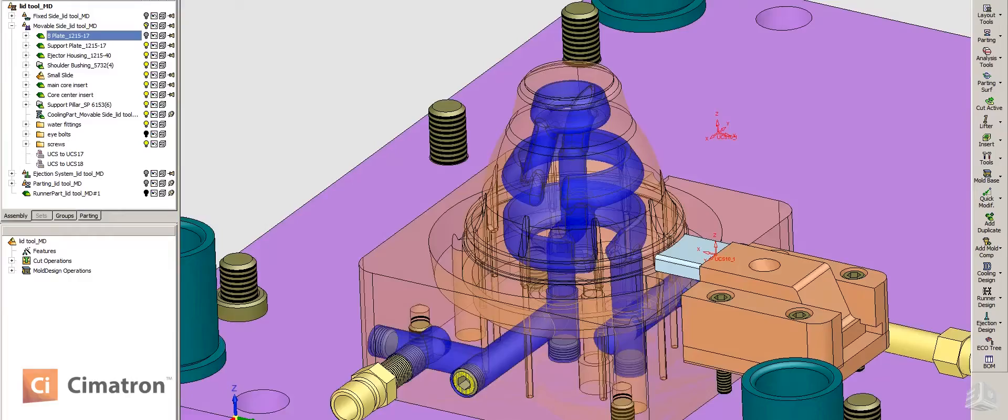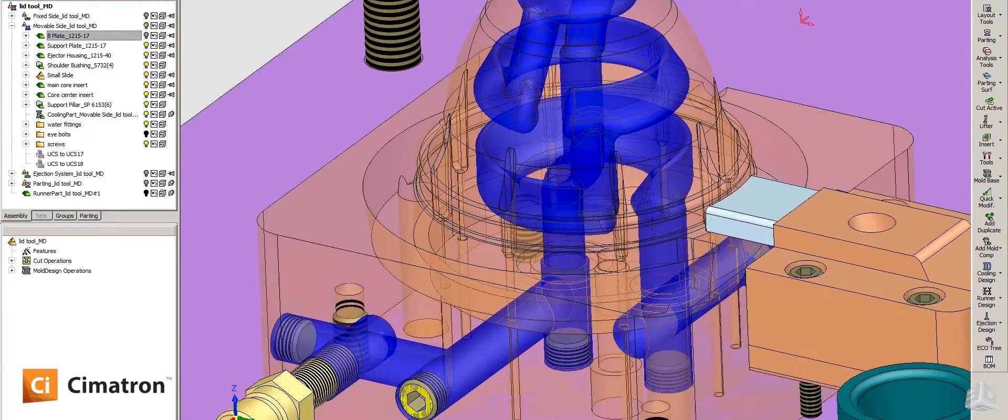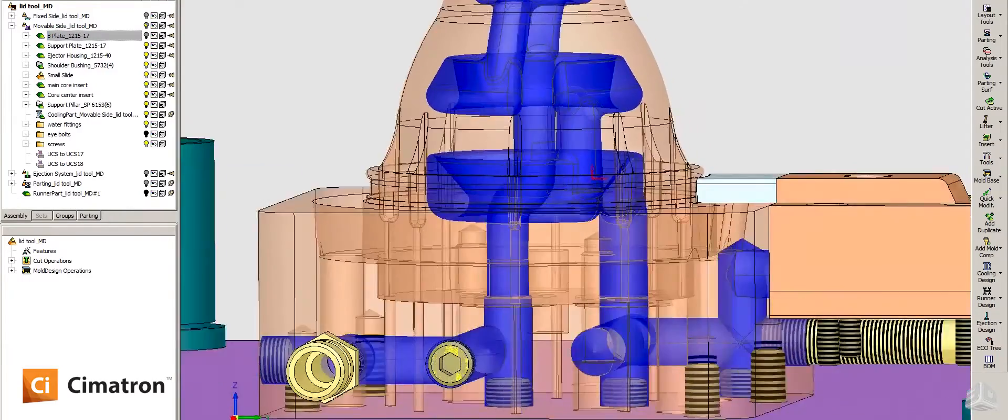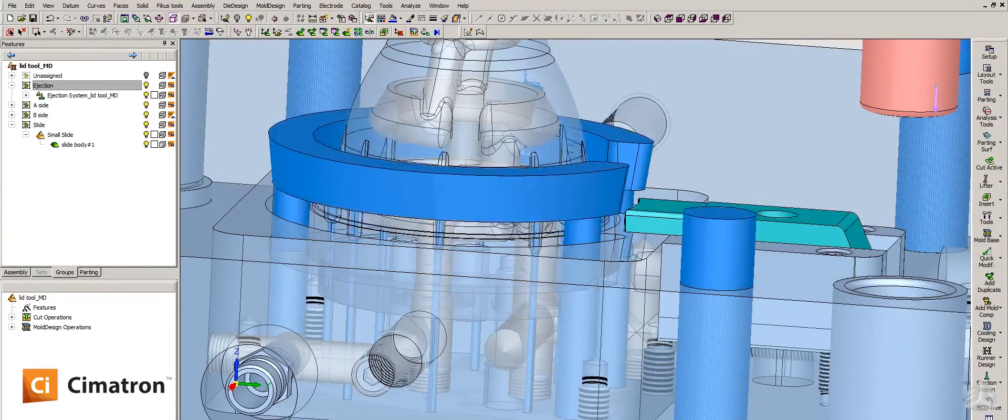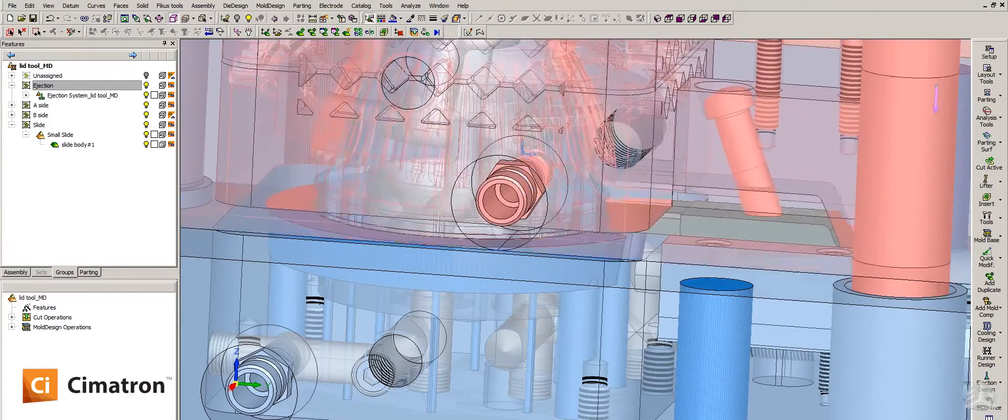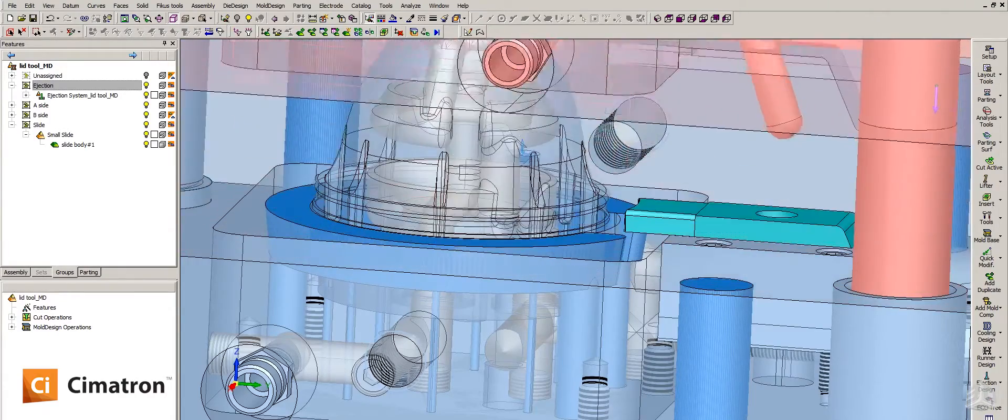As he snakes that water line through the core, he may need to change its shape, its diameter. You may need to check to see if it's going to possibly come close to an ejector pin, all the while he can be doing that and checking to make sure that it's within a minimum condition of material.